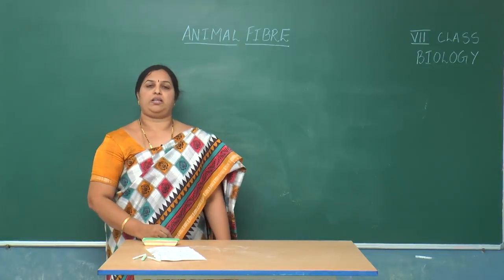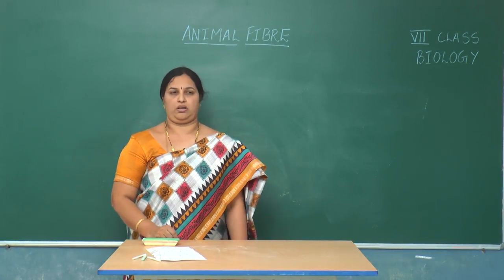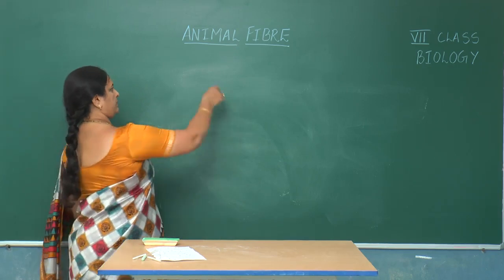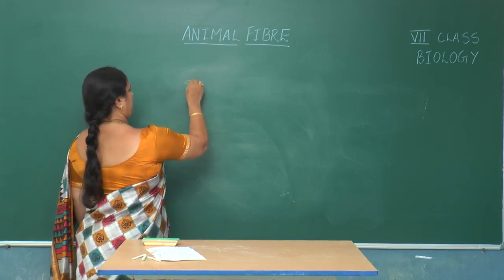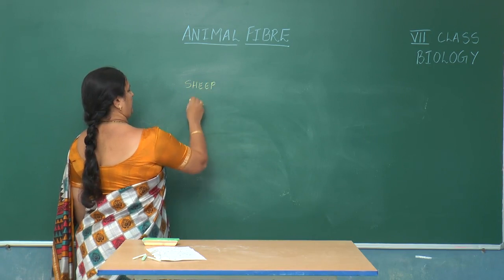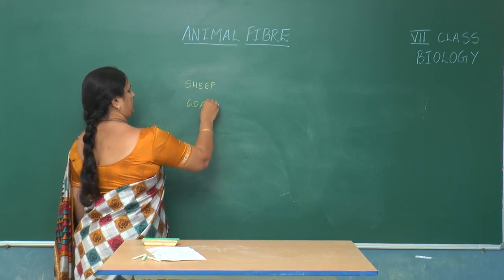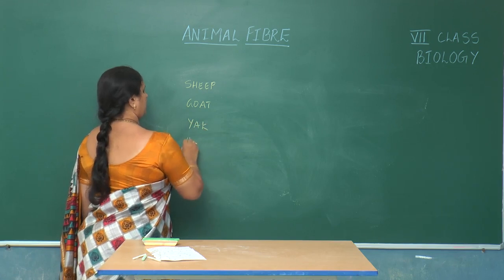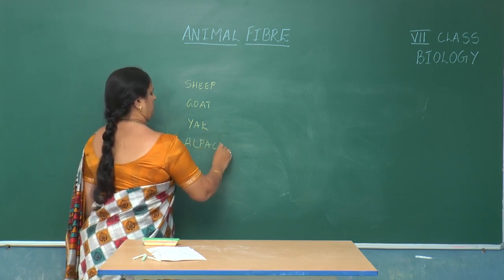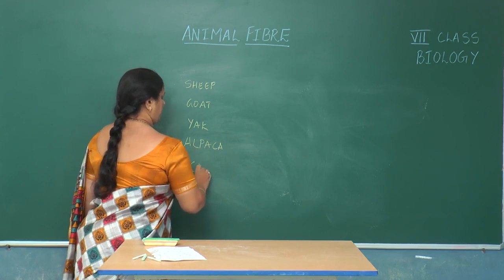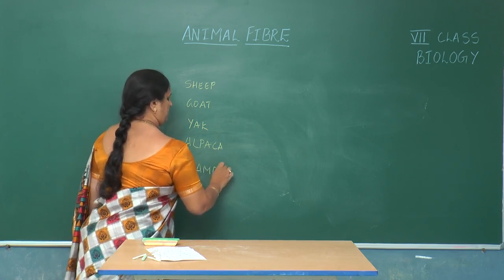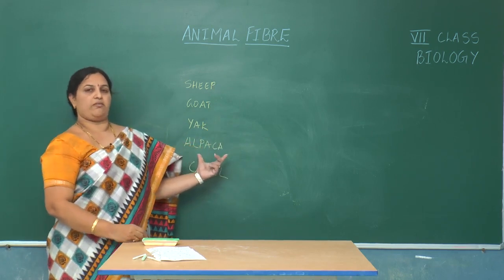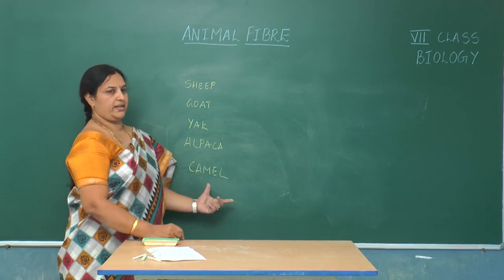Let us study the production of wool from the following animals. Wool is produced from animals like sheep, goat, yak, alpaca, and camel. These four animals — sheep, goat, yak, and alpaca — live in colder areas of our country, whereas the camel lives in the desert.